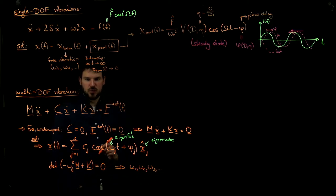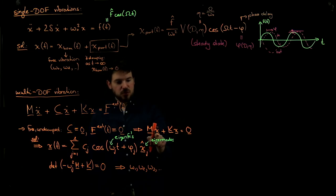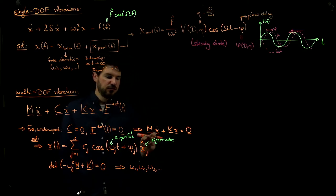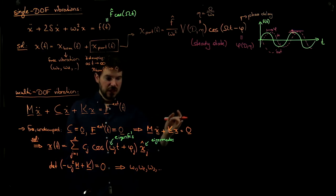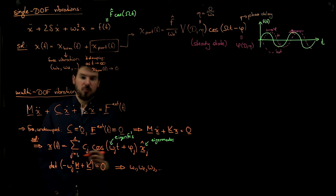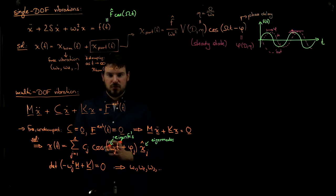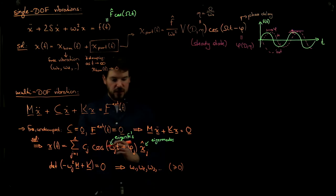How many eigenfrequencies do we have? This depends on the size of M and K, which depends on how many unknowns are in the vector x. If you have n degrees of freedom, then these matrices are of size n times n, and we naturally obtain n eigenfrequencies omega squared. In principle we get plus-minus solutions, but we usually only care about the positive or non-negative eigenfrequencies — so we would have n unique eigenfrequencies.